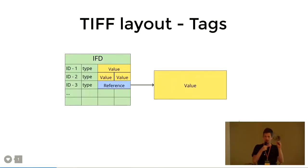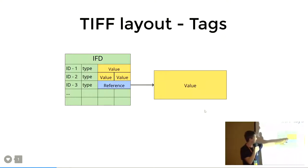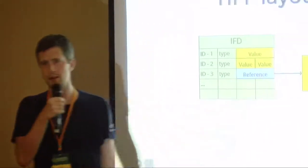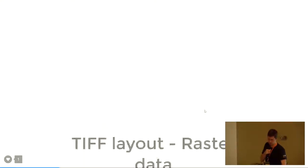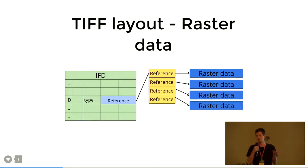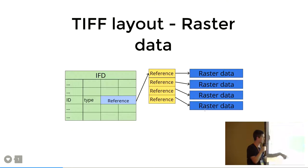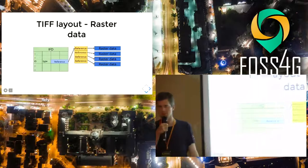If you look at one IFD, you have basically the identifier, the type, and then the value. If the value does not fit in the available bytes — for example, you have a two-byte value or two one-byte values — but if the value is bigger than two bytes, you have to make a reference to the actual value. This is used usually for the raster table: locations in the file where the actual raster data is stored, which is usually larger and does not fit in the tag itself. You notice a pattern — these arrows, these indirections, are bad, especially for performance.